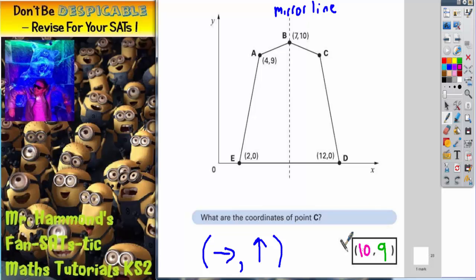This 10 comes from the fact that point A is 4 across and point B is 7 across, which gives us a gap of 3. So we then do the same gap of 3 to get level with C. So it goes 4, 7, 10, which is why we've got 10.